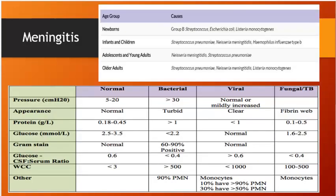Meningitis by age: newborns (0–1 month) — GEL: Group B Strep, E. coli, Listeria; infants and children — Strep pneumoniae, Neisseria, Haemophilus; adolescent/young — Neisseria and Strep; older adults — Strep pneumoniae number one, plus Neisseria and Listeria. CSF in bacterial meningitis: high protein, WBC >500 with >90% polymorphonuclear cells. Viral/fungal/TB meningitis shows lymphocytes or monocytes.